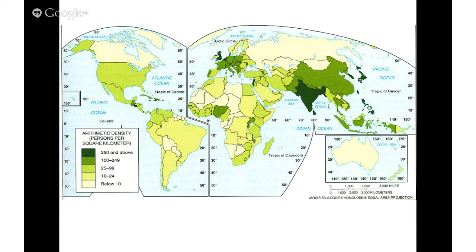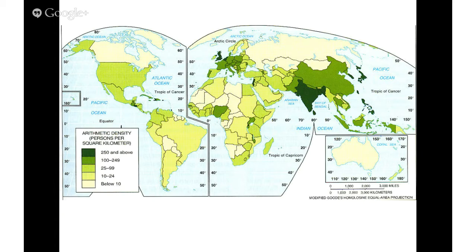If you look at India, for example, there's a high concentration of people per square kilometer. You also see that in Bangladesh to the east of it. Japan and Tokyo have a huge clustering, and so does London, England, Great Britain, and the Netherlands. It's good to know common trends and patterns of where those population clusters are, both globally and regionally. Arithmetic density is simply people per square kilometer.